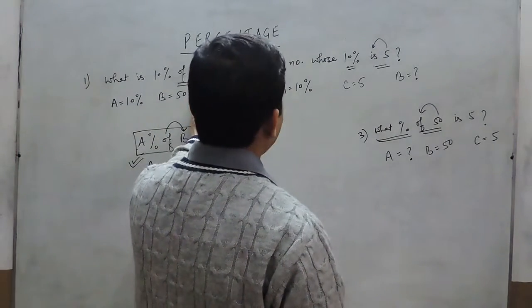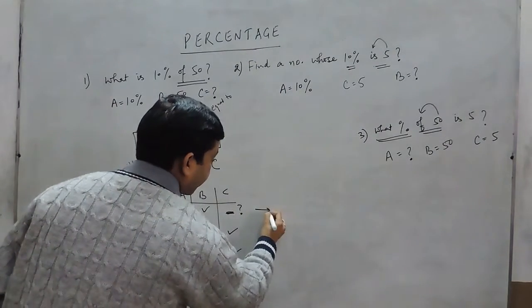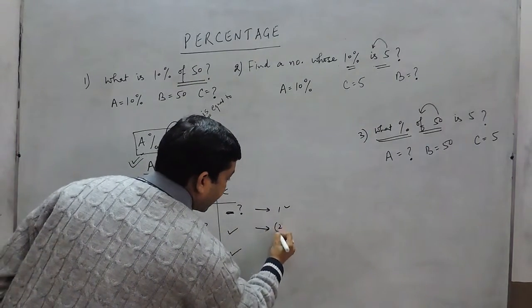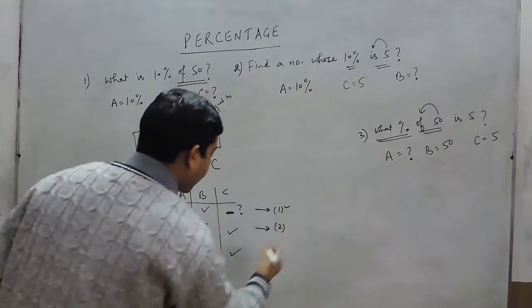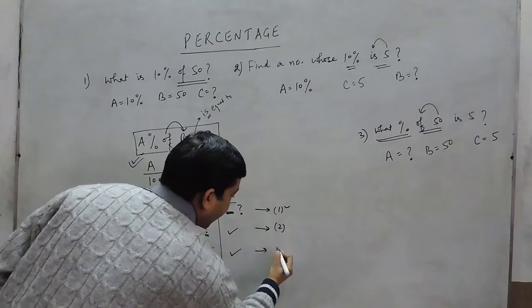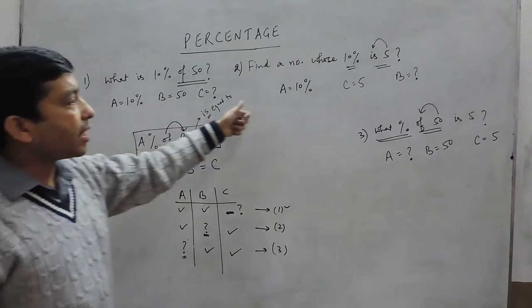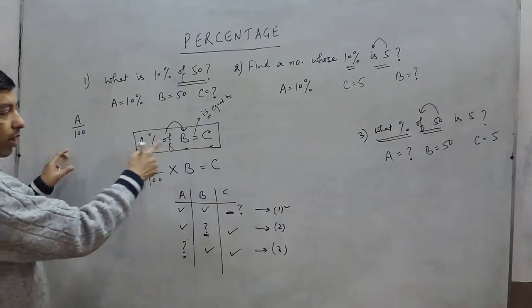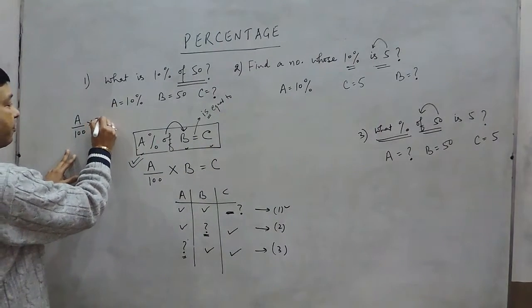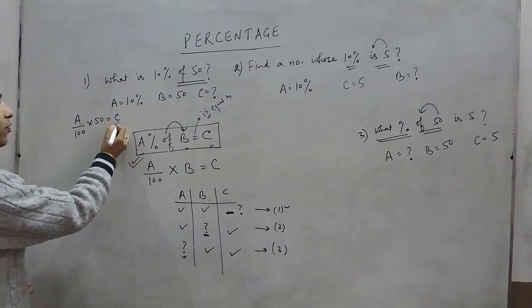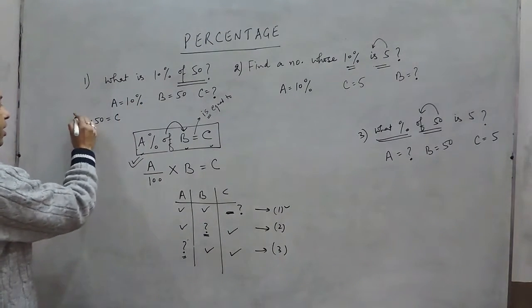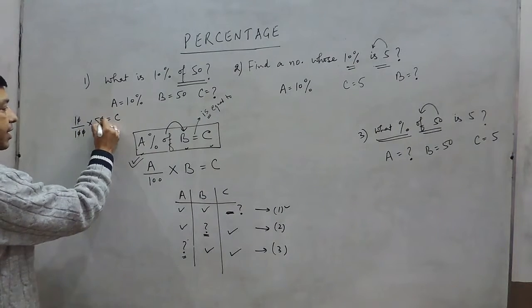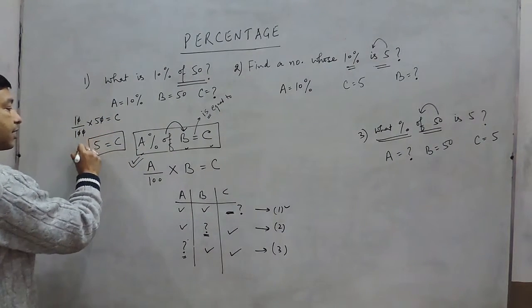So in the first case, A is 10% and B is 50, and we calculate C. In the second case, A and C are given and we find B. In the third case, B and C are given and we find A. For the first question: A upon 100 into B equals C, so 10 upon 100 into 50 equals C. Cancelling out, C comes out to be 5. The correct answer is 5.